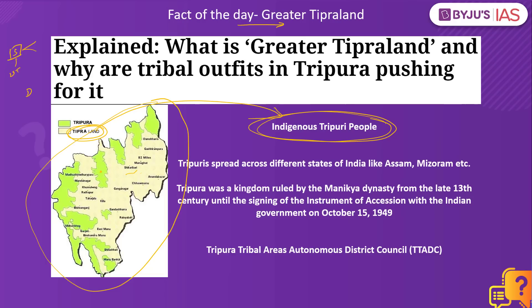Greater Tipraland goes further than just Tipraland. While Tipraland means carving out a region from the existing state of Tripura, Greater Tipraland also includes areas where Tripuris are present in Assam, Mizoram, and even in Bangladesh. The objective is to connect all these areas together under one greater Tipraland.